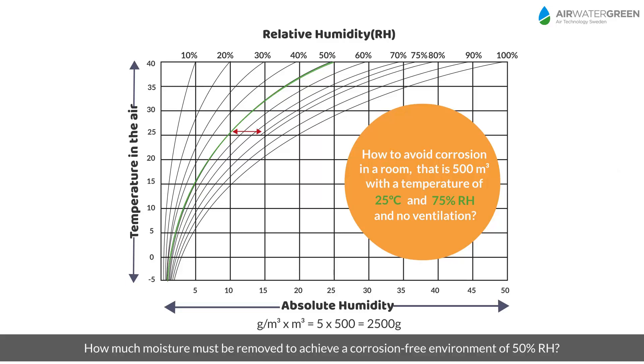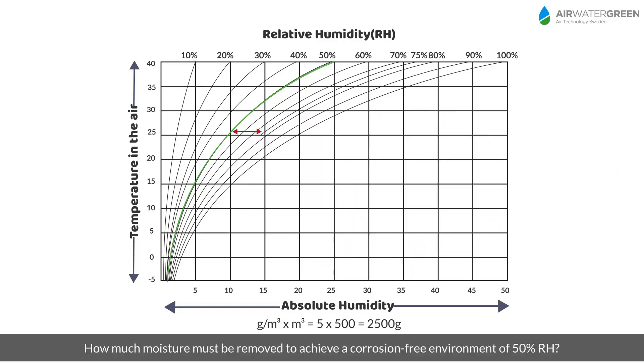How much moisture must be removed to achieve a corrosion-free environment of 50% relative humidity? This shows that we need to remove 2500 grams of water from the air.